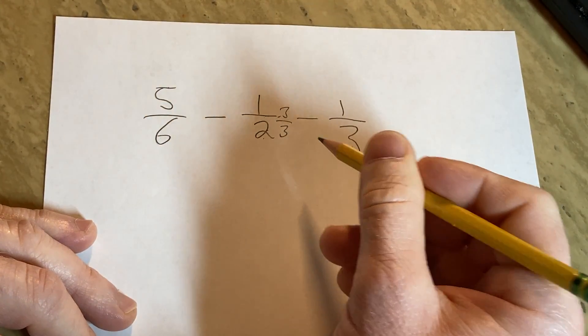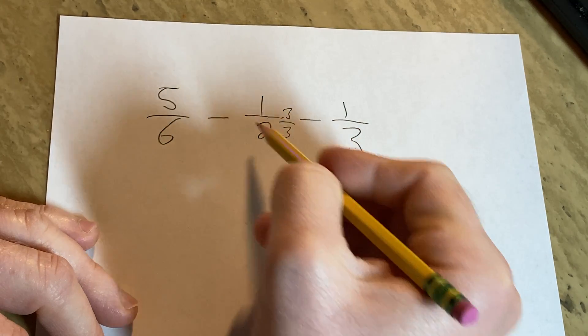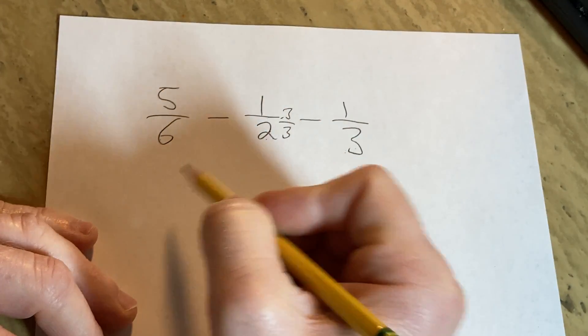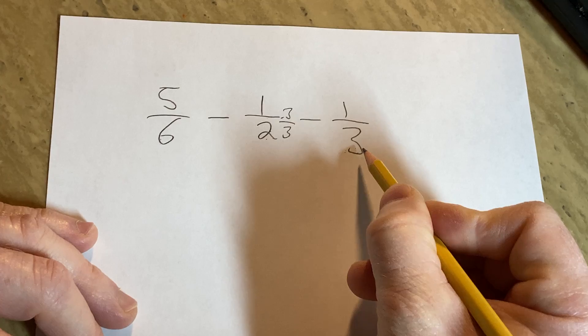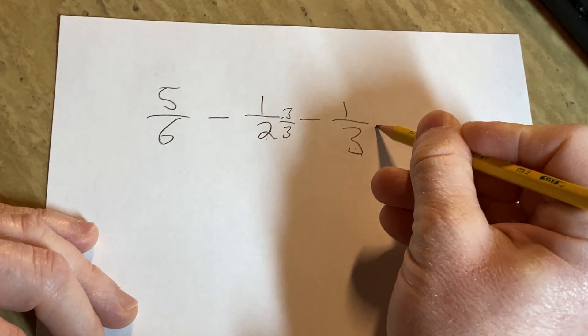We're allowed to multiply by 1. That's how we manipulate denominators. We multiply by 1 in a clever way. 3 times 2 is 6, which is what we want. Here we also want a 6 and we're missing a 2, so we multiply by 2 over 2.